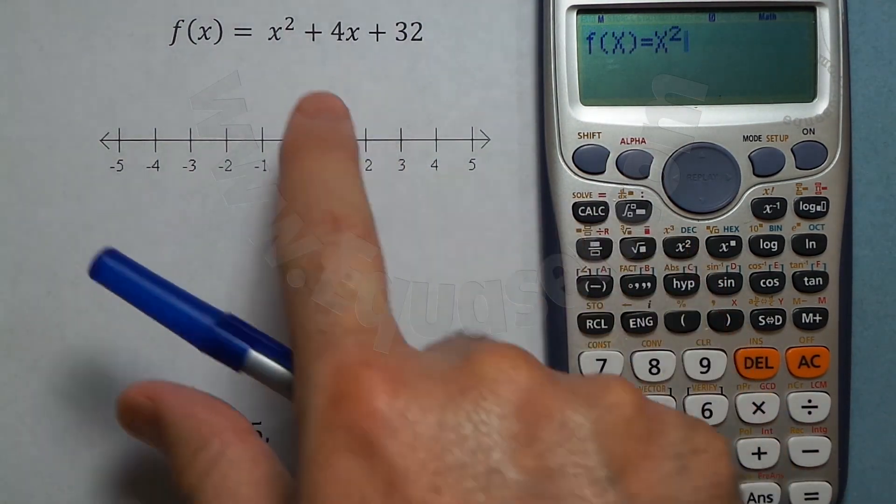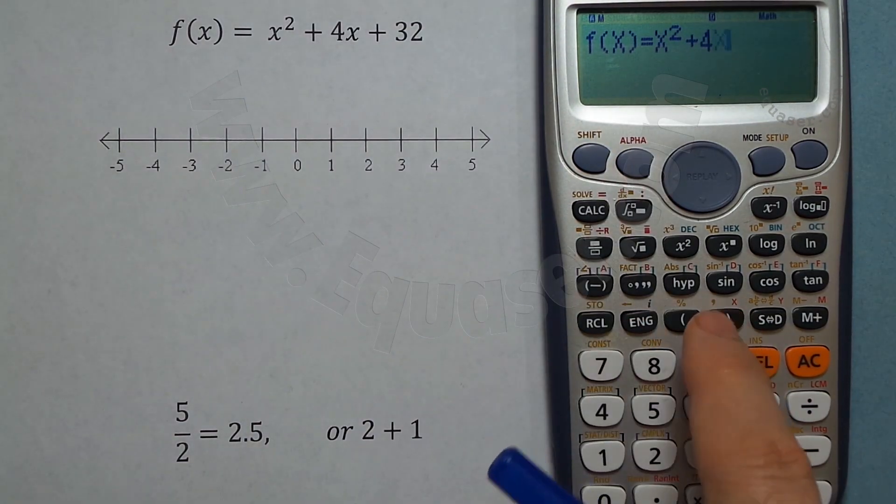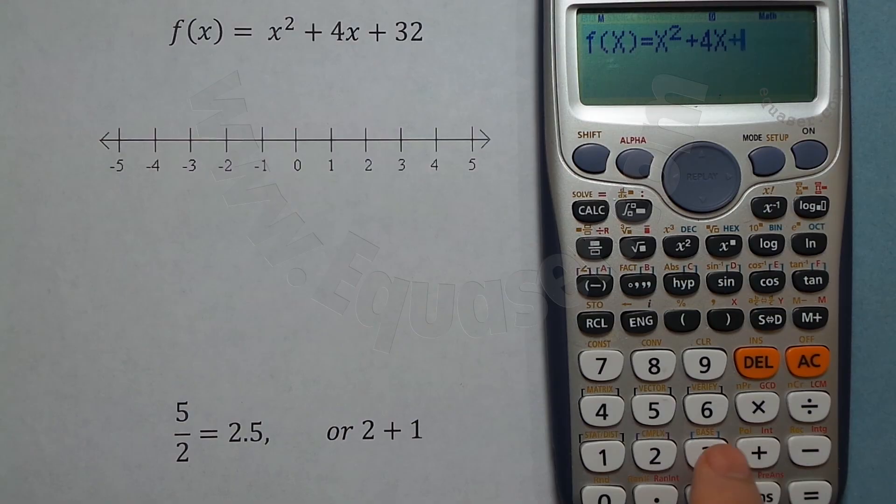Plus 4 and then alpha x plus 32. So I press equal sign. It says g(x) - sometimes you need to generate table of values for two functions simultaneously.